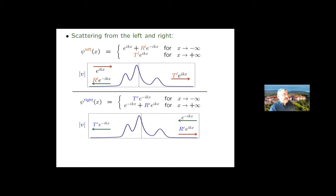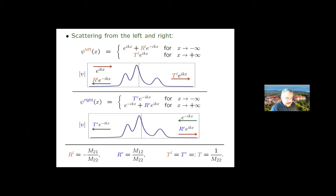Among these general solutions, there are the scattering solutions — the left incident waves where the incident wave comes from minus infinity, partly reflected, partly transmitted. These are the reflection and transmission amplitudes. Or you can send the incident wave from plus infinity and then it's partly transmitted and partly reflected. Using the definition, you show that these reflection and transmission amplitudes are related to the entries of the transfer matrix. Therefore, once you calculate the transfer matrix, you know the reflection and transmission amplitudes for your potential. In particular, the left and right transmission amplitudes turn out to coincide — this is called reciprocity in transmission.